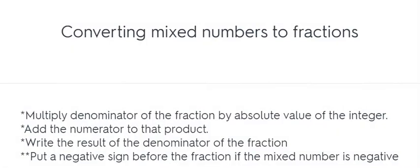Converting mixed numbers to fractions. Multiply denominator of the fraction by absolute value of the integer. Add the numerator to that product. Write the result over the denominator of the fraction. Put a negative sign before the fraction if the mixed number is negative.